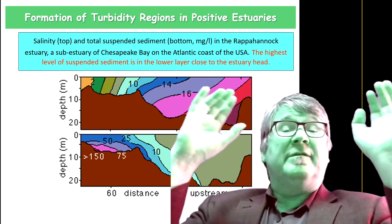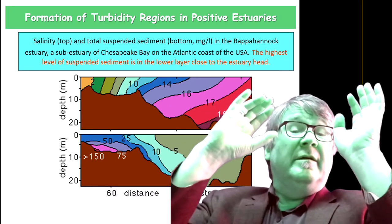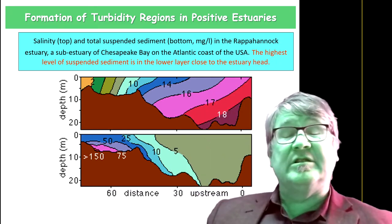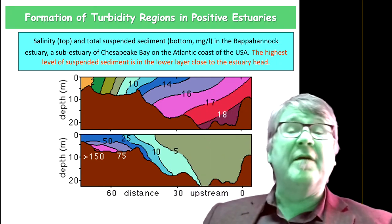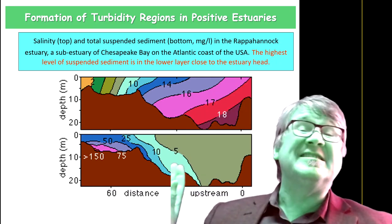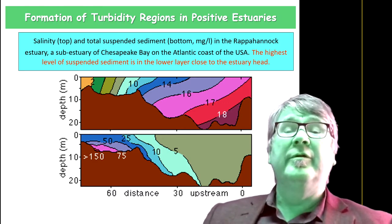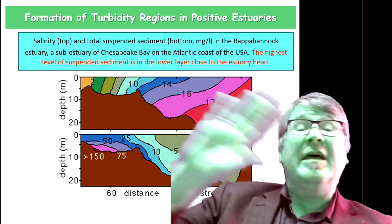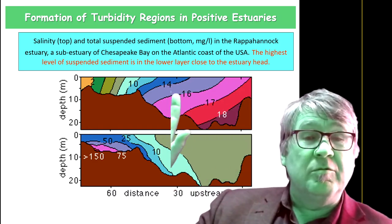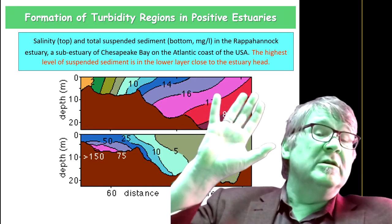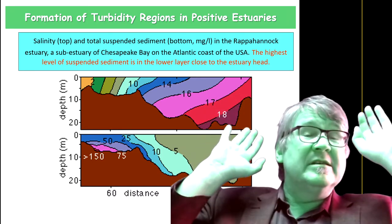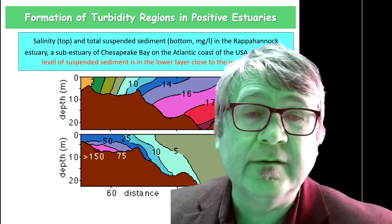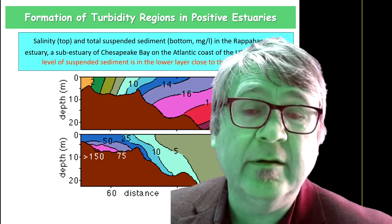You see two distributions. The top graph shows you the salinity distribution. On the left side is the river, on the right side is the ocean. This is a slightly stratified positive estuary.